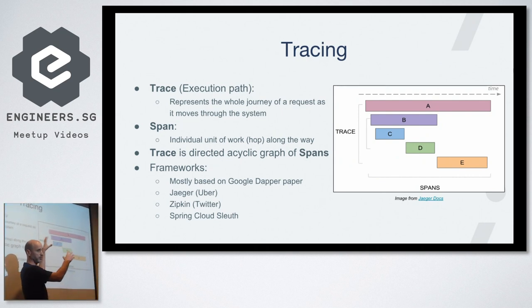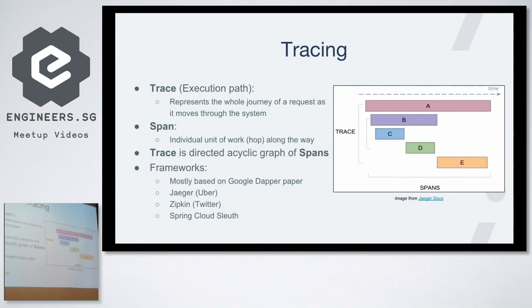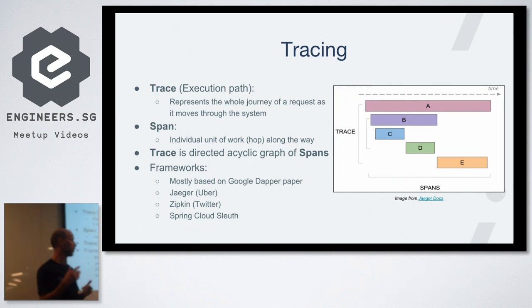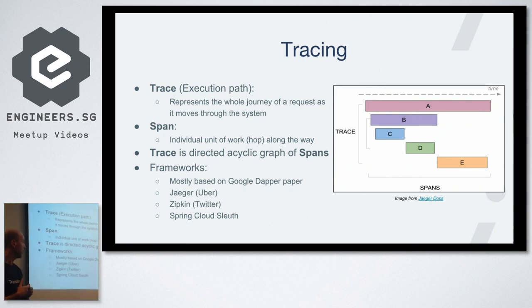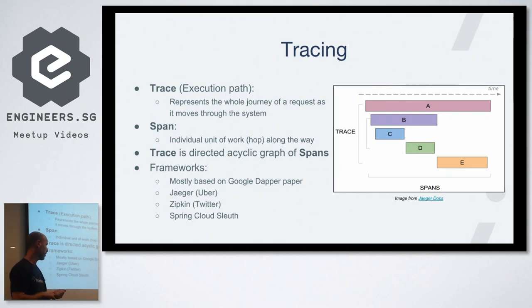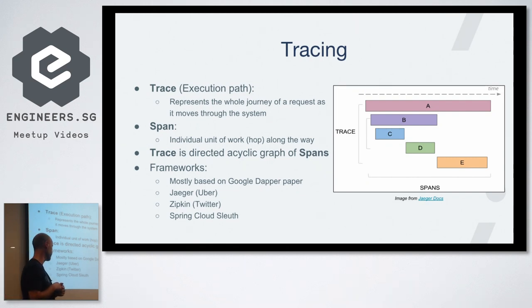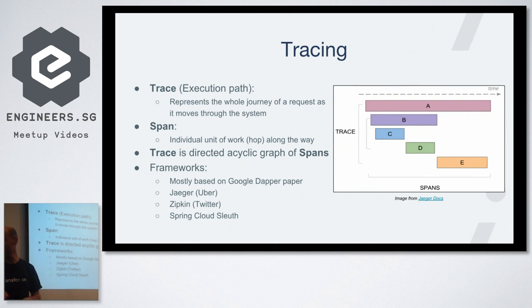Tracing also gives you an understanding of your architecture because you can see the flow of requests through your systems. Most current frameworks are based on the Google Dapper paper. We have Jaeger, originally implemented by Uber, Zipkin by Twitter, and Spring Cloud Sleuth, which is mostly based on Zipkin as well.